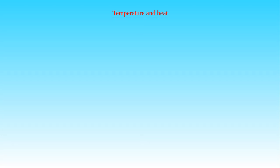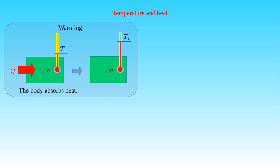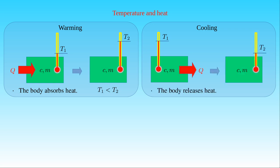Then we can talk about two cases related to the transport of heat between a body and its environment: warming bodies and cooling ones. A body with mass M and physical properties characterized by the proportionality factor C at temperature T1 is warming if the body absorbs an amount Q of heat and its temperature rises, reaching the temperature T2, where T1 is less than T2. In the case of cooling, the body releases an amount Q of heat and is cooled to temperature T2, where T1 is greater than T2.